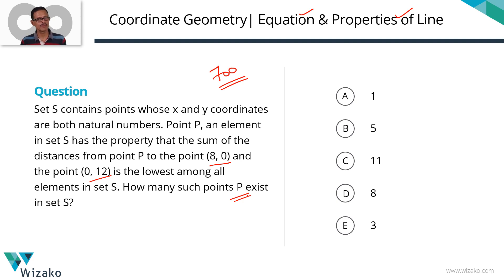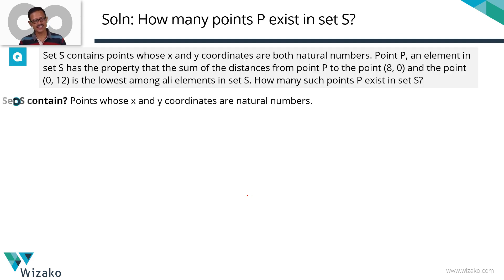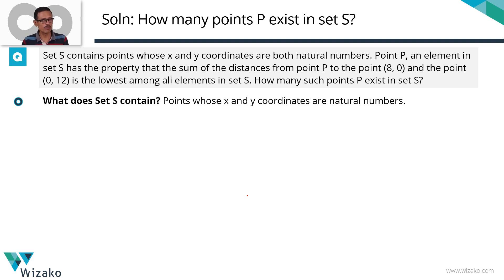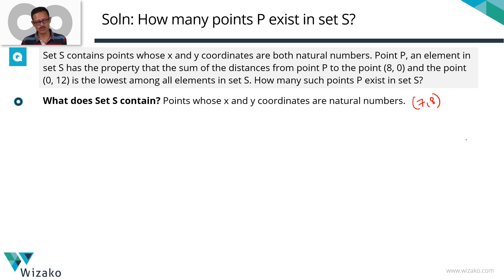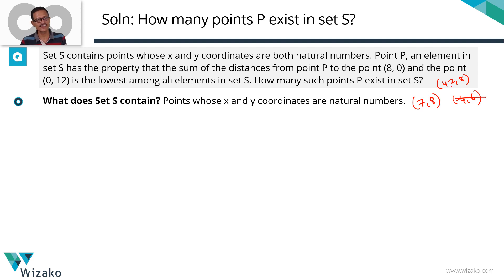Let's quickly draw down key data, ask some relevant questions, and then get around to solving this question. Set S contains points whose x and y coordinates are positive integers or natural numbers. An example could be (7, 8). What cannot be an element in set S? Something like (−4, 6) is not in set S because the x-coordinate is not a positive integer — it's negative. Neither can (4.2, 8) be in set S because 4.2 is not an integer. Points like (7,8), (4,5), and (2,7) are all valid elements of set S.